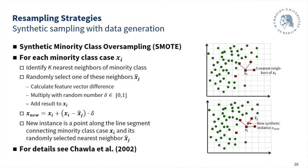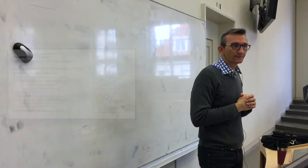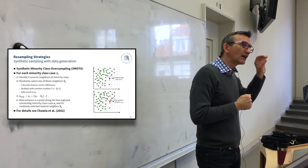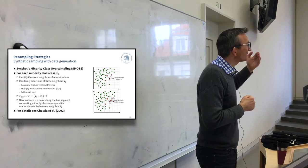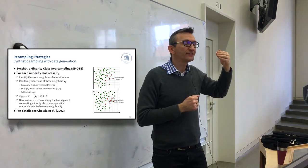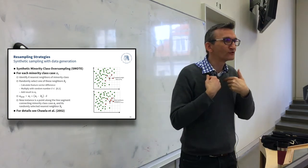Typically, going all the way to a 50-50 split is not needed. Most classifiers are okay with an imbalance ratio of around 80% to 20%. If the minority class still covers 20% of the data, I wouldn't bother. If it's 9-to-1, I start thinking about it. If it's 99-to-1, I probably want to try whether something like SMOTE gives me an improvement. Note, however, that the relative imbalance — 99% to 1% — may not be the most important aspect. It's more the absolute imbalance that matters.